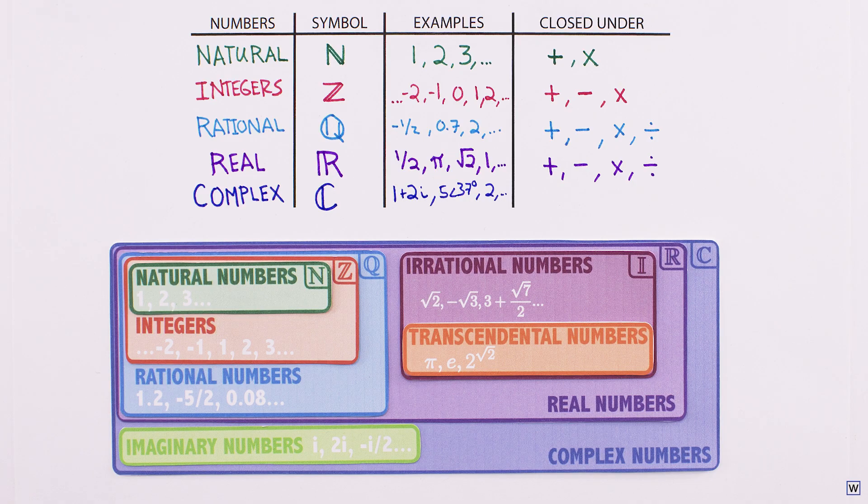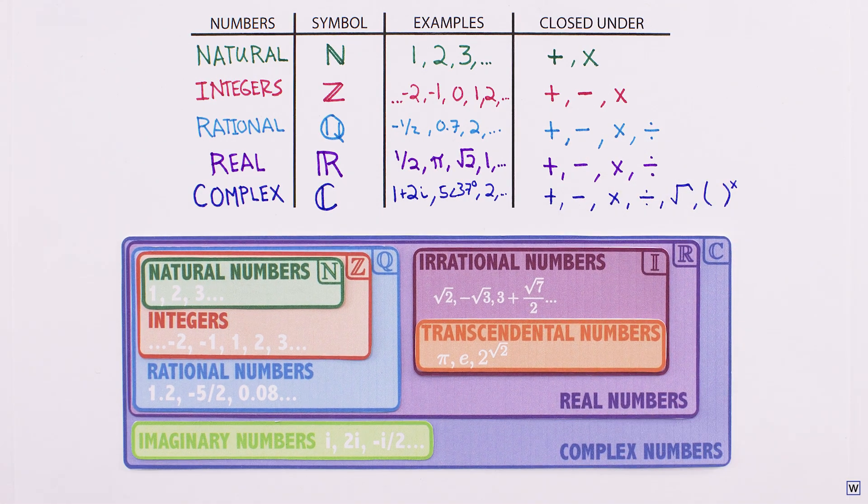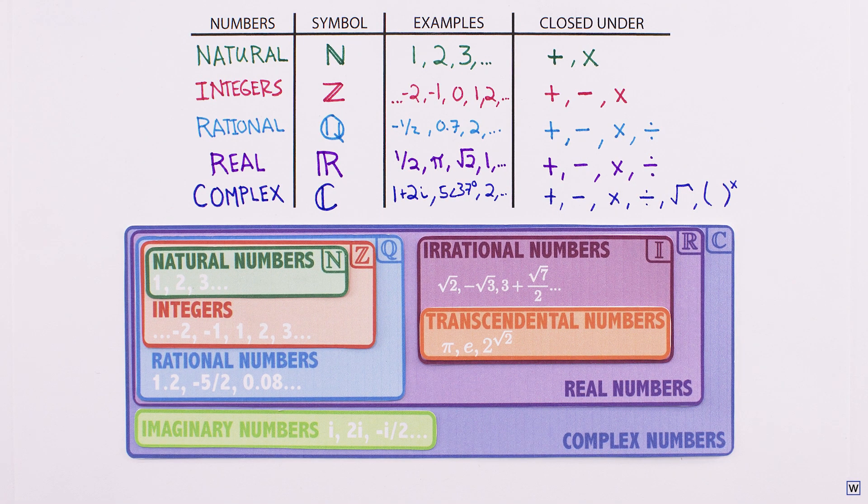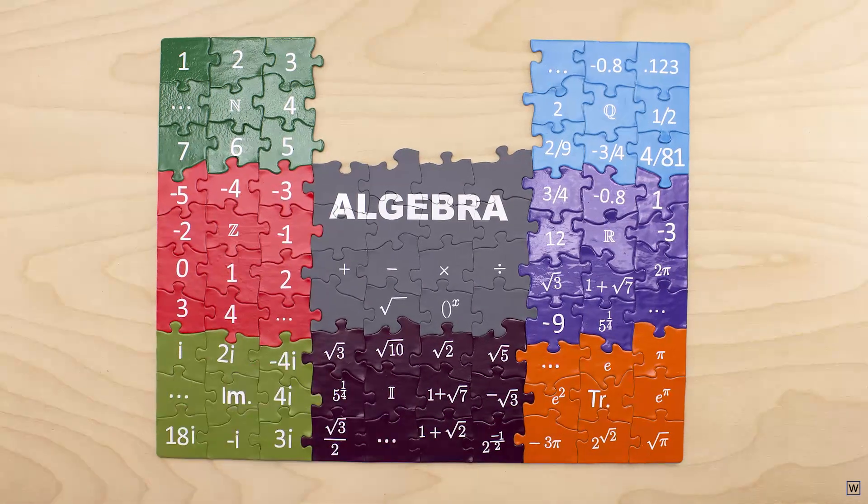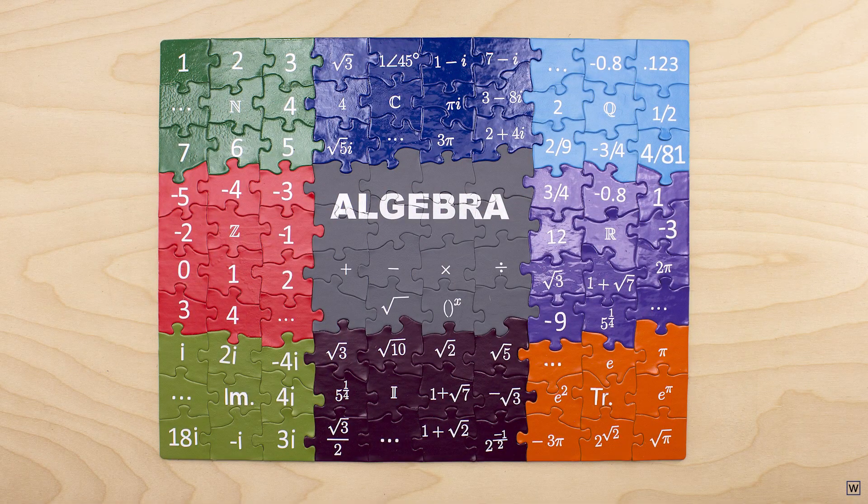In fact, there's no operation in the world using addition, subtraction, multiplication, division, powers, and roots that the complex numbers can't handle. Imaginary numbers are the exact missing piece that makes algebra complete.